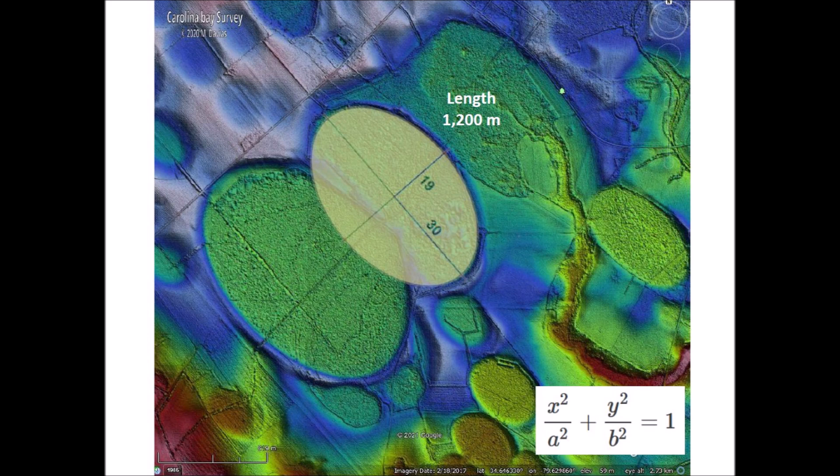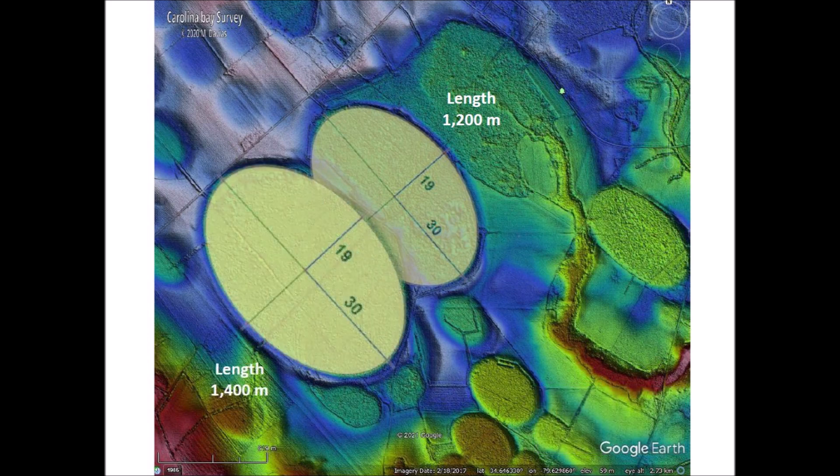The highlighted bay has a length of 1,200 meters. The width cannot be measured directly because a portion of the bay was overlaid by another bay, but because the bays are elliptical conic sections, it is mathematically possible to determine the shape of partially obscured bays from five points along their curves. A Carolina Bay with a length of 1,400 meters overlaps the previous bay, meaning it was emplaced later in time. This bay also overlaid a couple of small bays in its southeast margin.